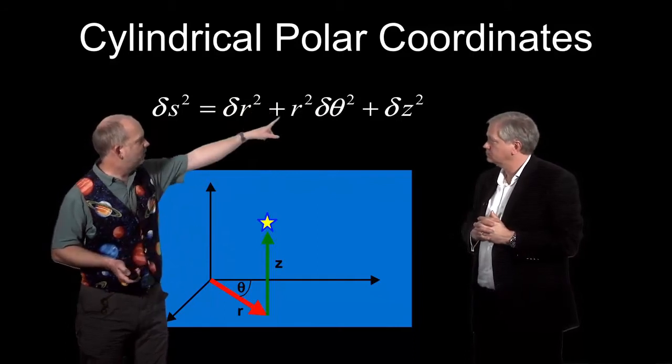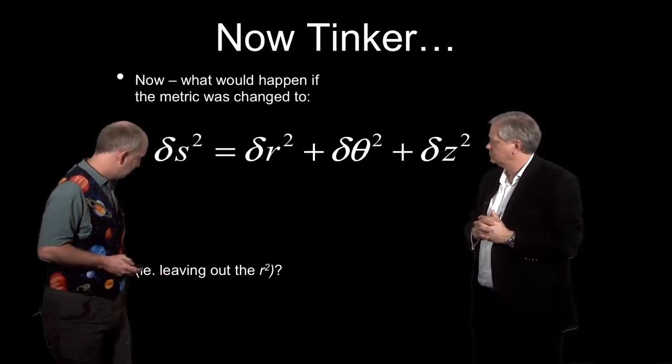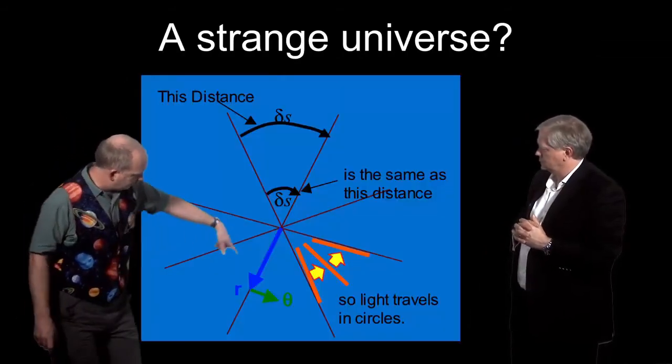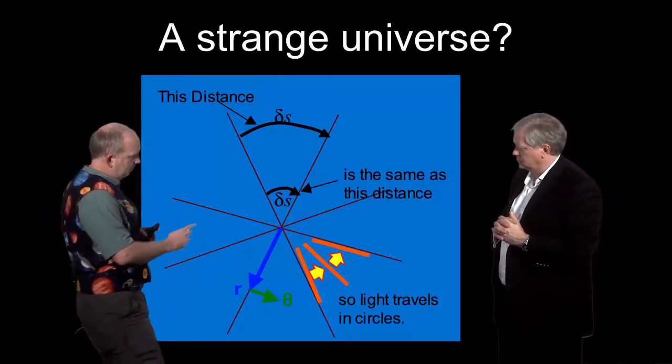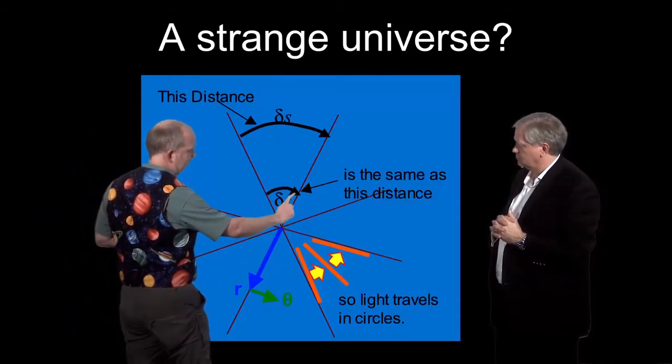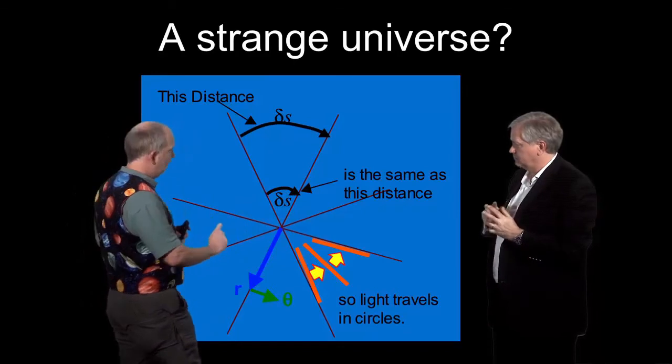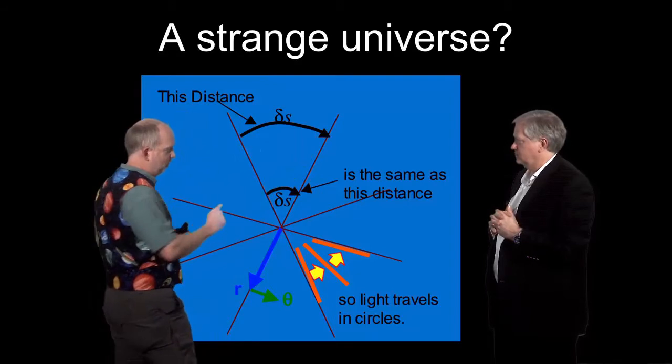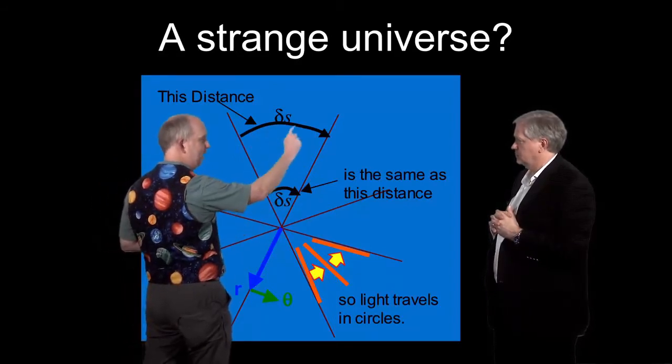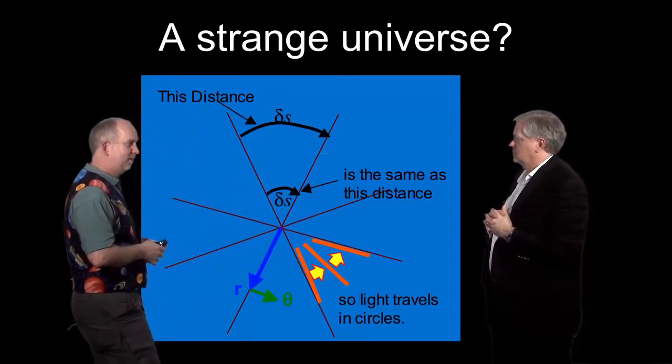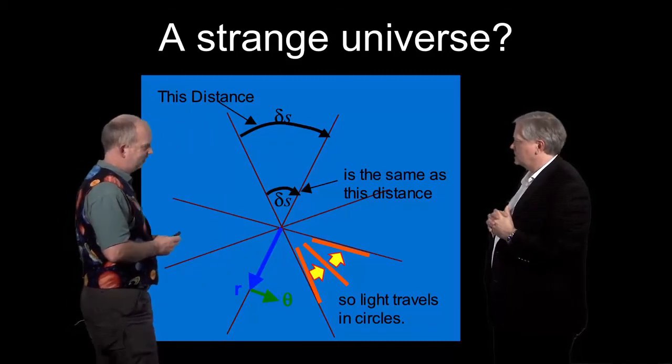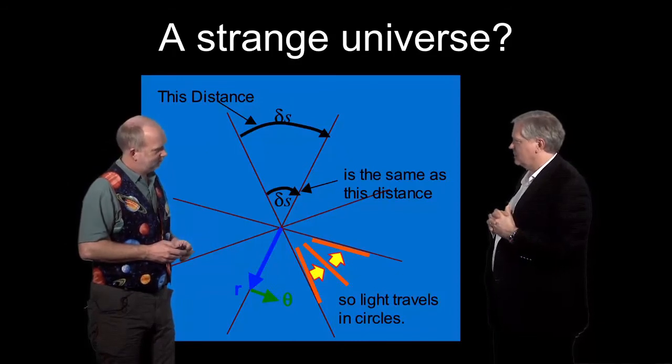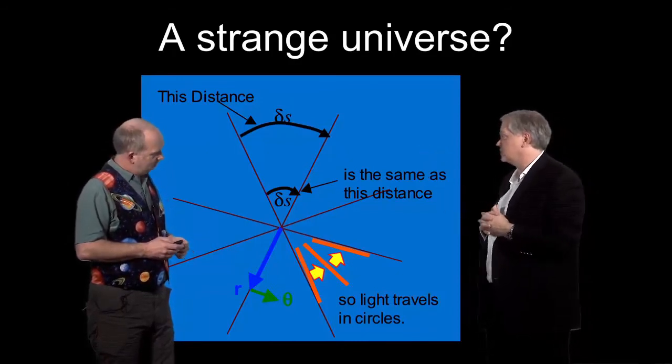But let's imagine we get rid of that R squared. So we've now got this. What's going to happen in this universe? So we can look here, we've got angle theta again. Now what's going to happen is, let's say you move from there to there, it's going to be a given change in angle. And moving from there to there is the same given change in angle. So those are actually the same ds, the same distance, according to this metric. So that sounds to me like it's going to change the way you move around in a universe that had this law associated with it.